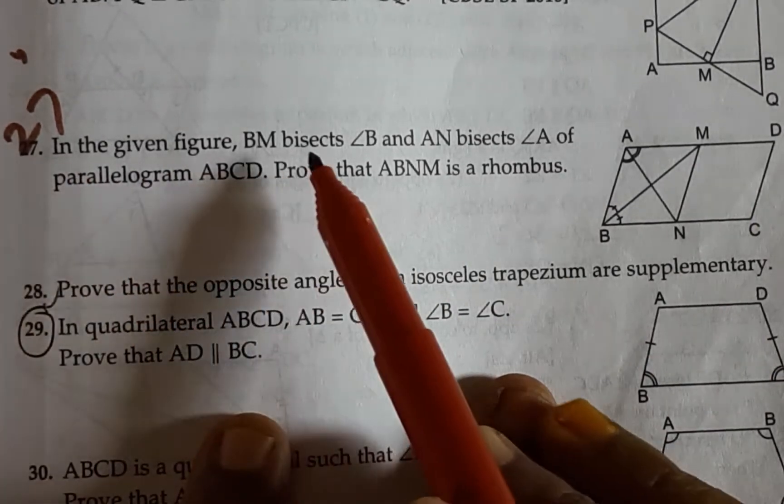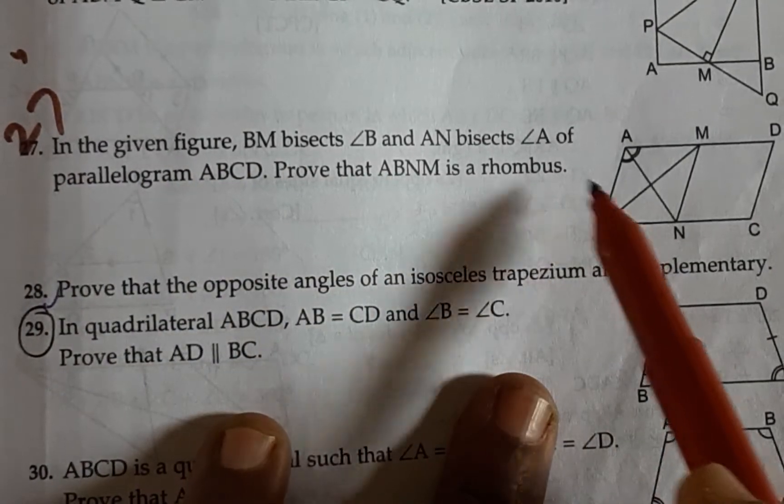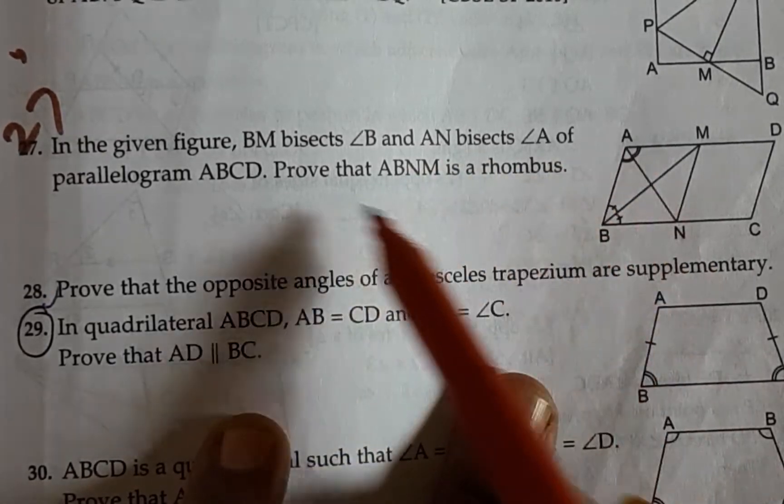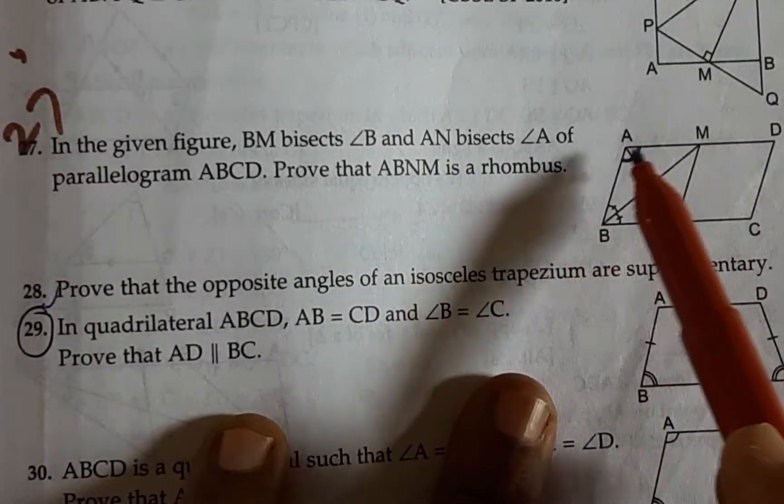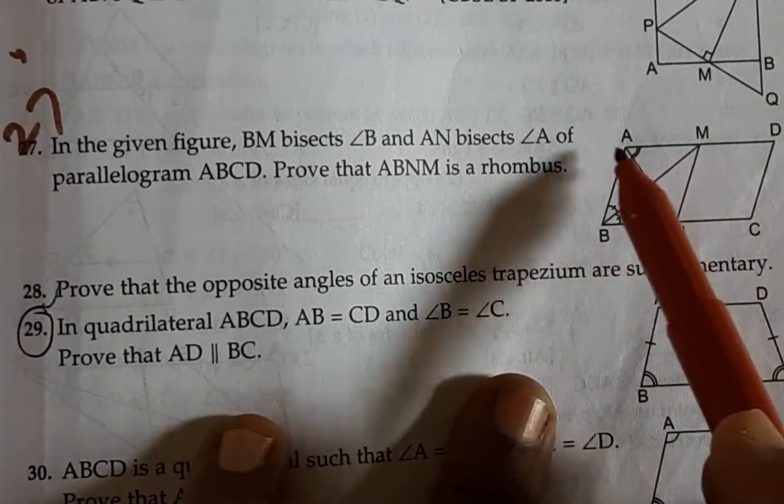The 27th question: BM bisects angle B, AN bisects angle A of parallelogram ABCD. Prove that ABNM is a rhombus.